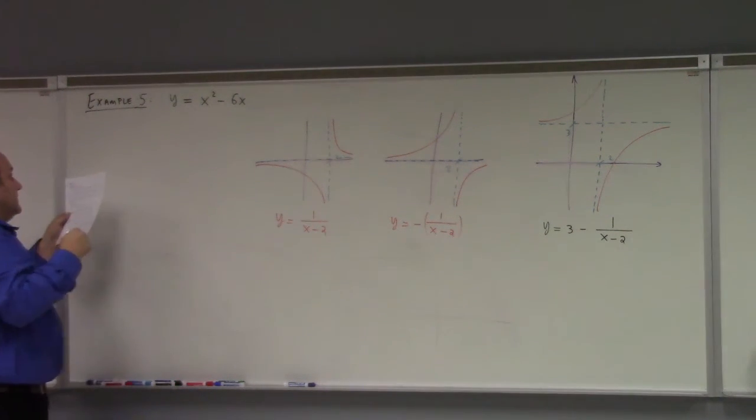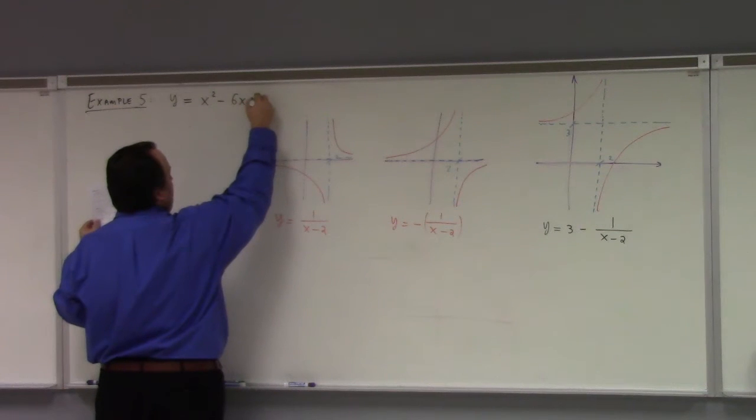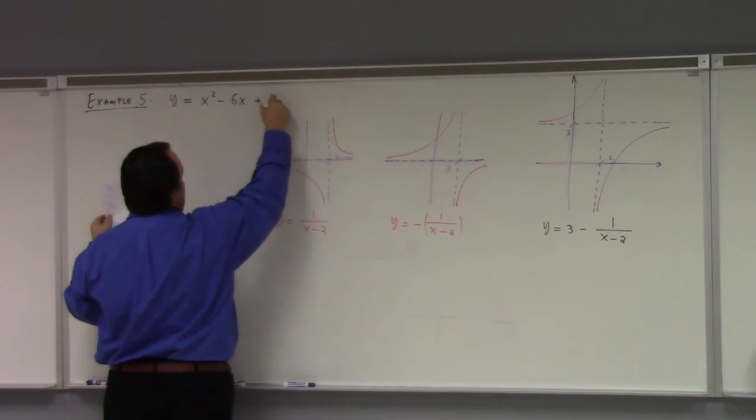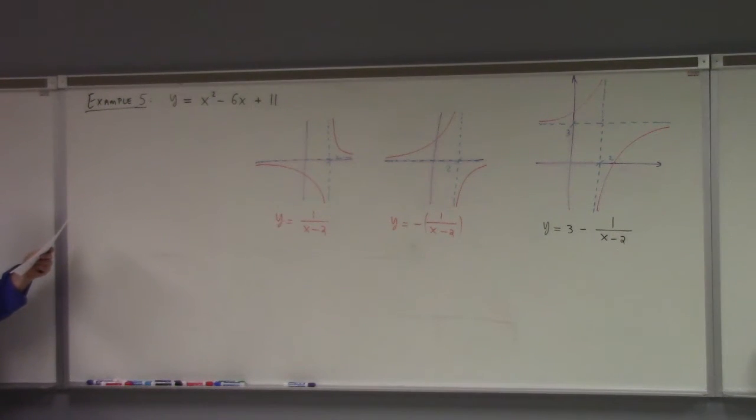So minus 6x, and I have minus 11 here, but I need to make that a plus 11, otherwise I would end up needing a shift of 20. And so because I changed that to plus 11, it means that step 3 is not right.